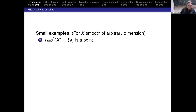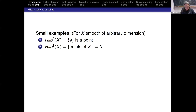Let's look at extremely small examples. What's the Hilbert scheme of zero points on a variety X? Zero points means we have the empty set, so the Hilbert scheme of zero points is one point, which parametrizes the empty set. If we look at the Hilbert scheme of one point on X, it parametrizes the points on X — that's X itself. And one can see that the Hilbert scheme of one point on X is indeed X.